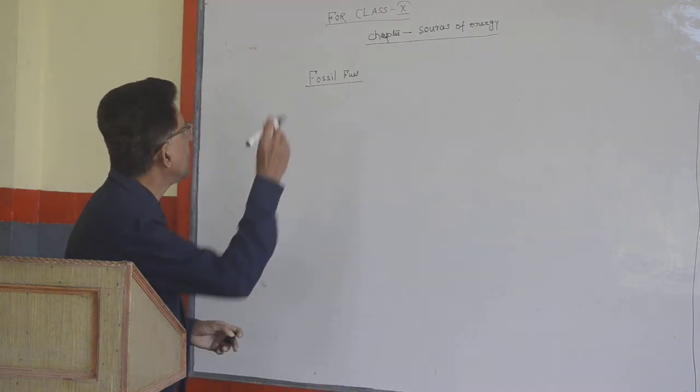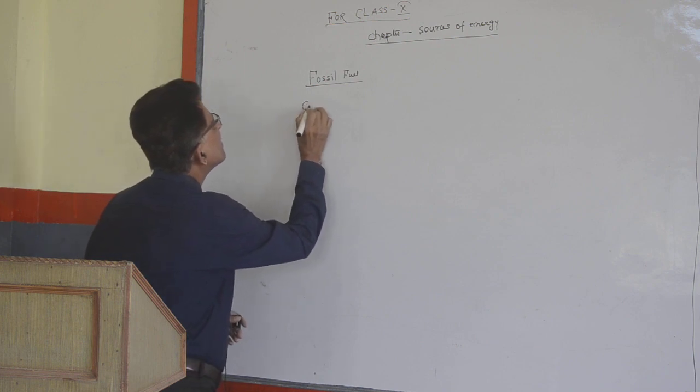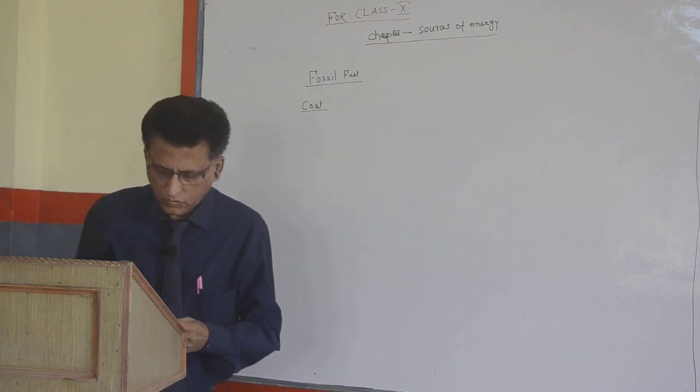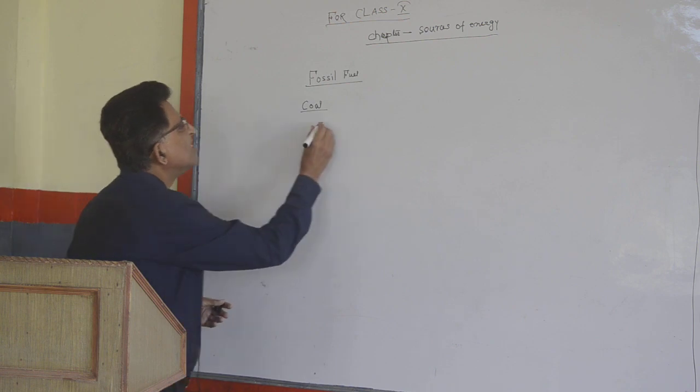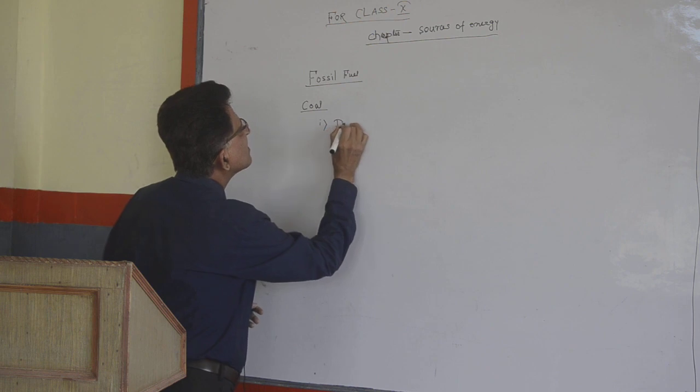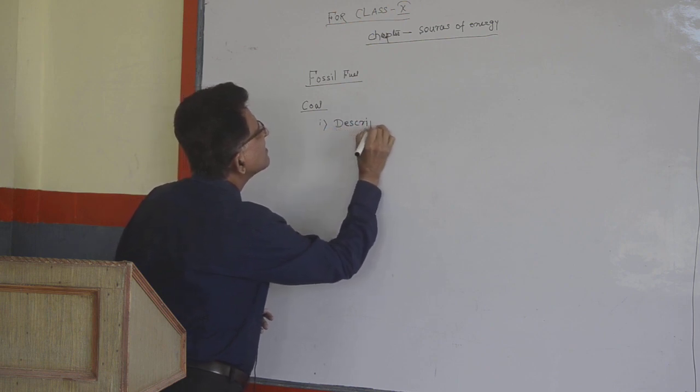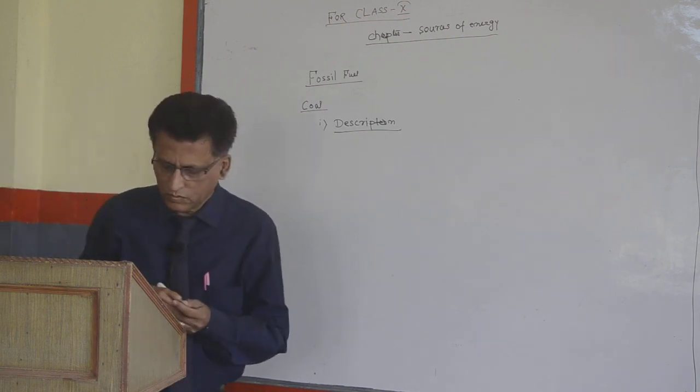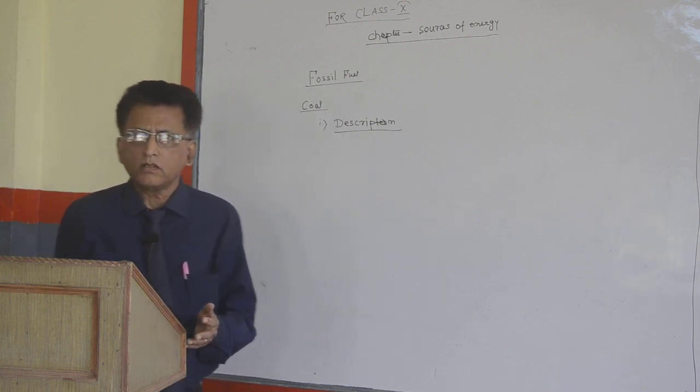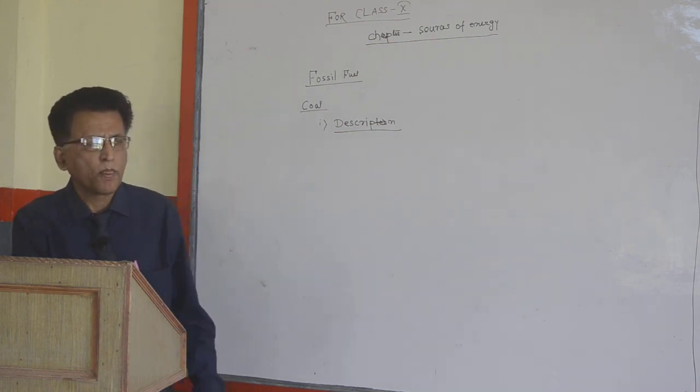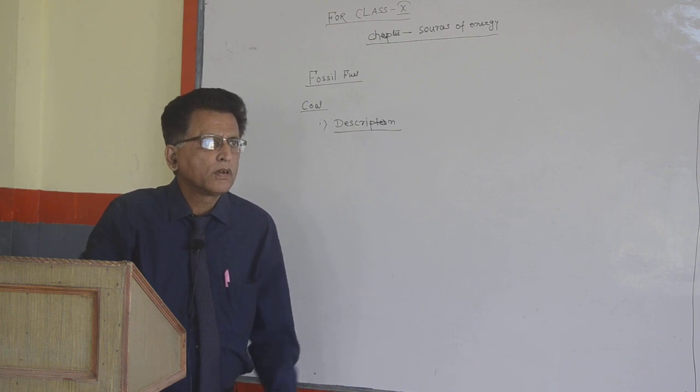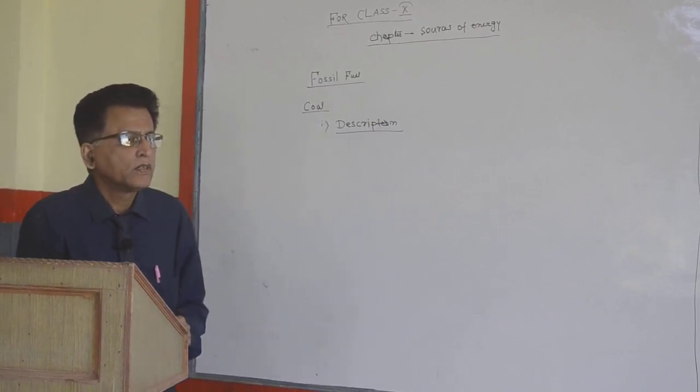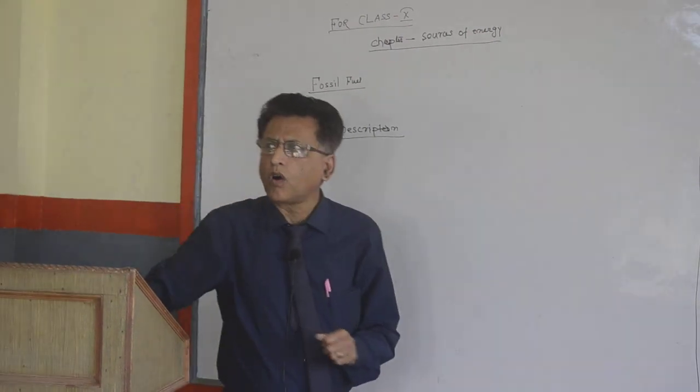Now, coal. Number 1: Description. Coal is natural carbon and compounds of carbon containing nitrogen, hydrogen, oxygen and sulfur.